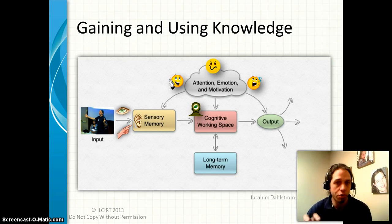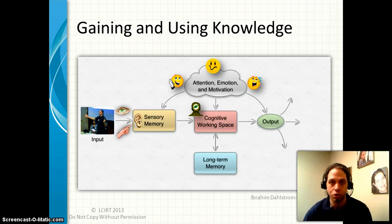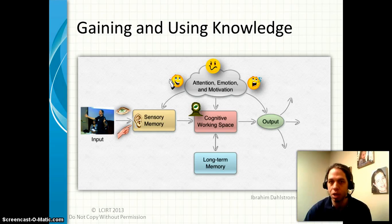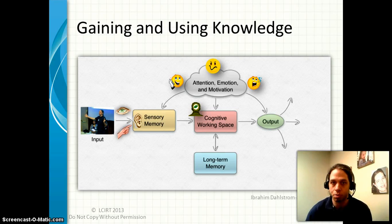Most of the memories and information we learn, however, has to go through that cognitive working space. This is where we act on information and where we enter information into our system. Information has to be in our cognitive working space for a certain period of time before it makes it into our long-term memory — typically at least five to ten minutes with a new idea or piece of information for it to enter long-term memory.